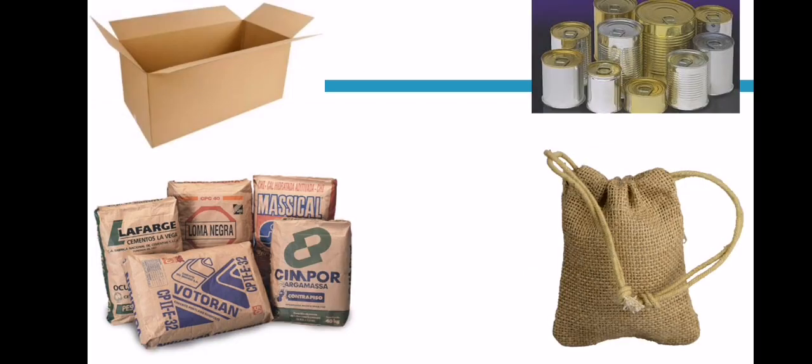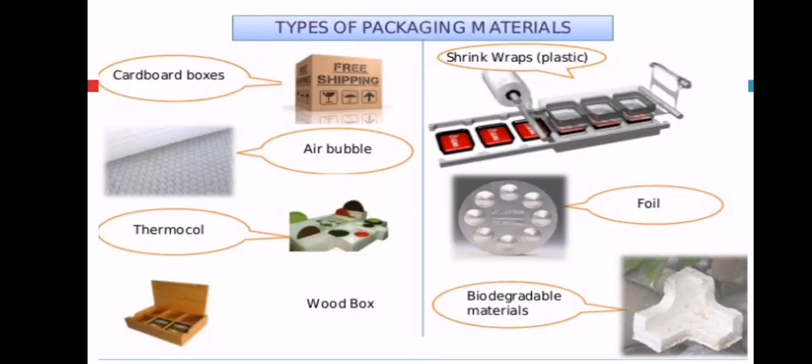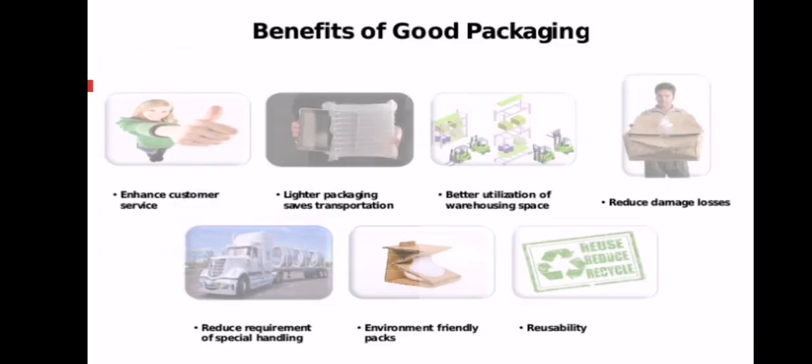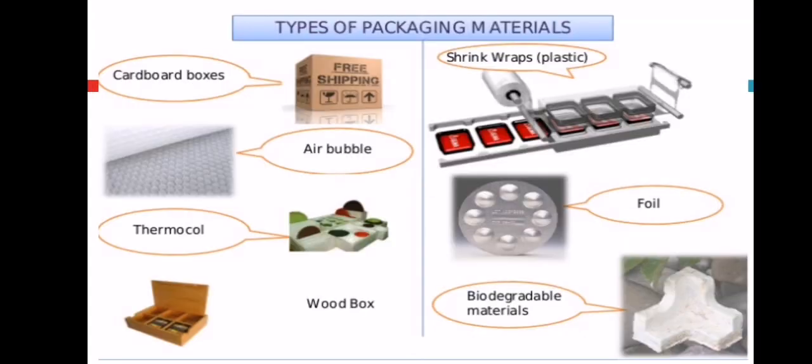These are different types of materials: jute bags, tin, cardboard boxes, and paper bags. These are the types of packaging materials: shrink wraps, foil, paper, biodegradable material, thermo cool packaging. When someone purchases a TV, refrigerator, or laptop, there's foam on the side. Wood box, thermo cool, air bubble wrapper.